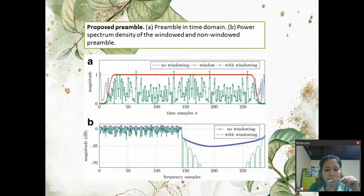This is the proposed preamble. A shows the preamble in time domain and B shows the power spectrum density of the windowed and non-windowed preamble. This illustration is the proposed preamble for K sub P equals 128 and L equals L sub CP equals W equals 32. In the figure, half of the subcarriers are intentionally disabled to illustrate the difference in OOB emissions between the conventional and extended approach.